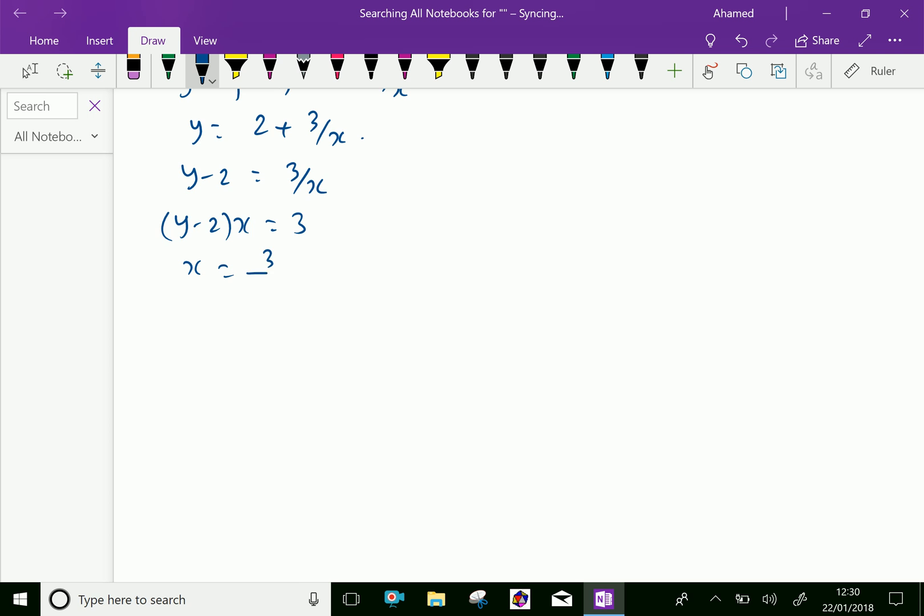Then x equal 3 over y minus 2. Therefore, change x as f inverse x and y as x, 3 over x minus 2.